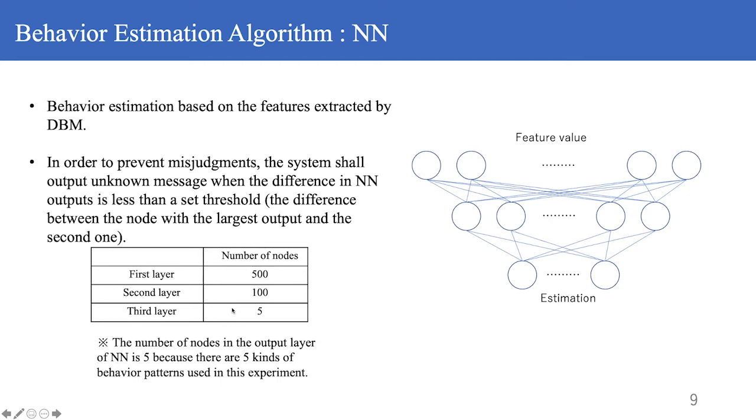With three layers of depth and the number of nodes in first layer is 500, second layer is 100, and third layer is 5.